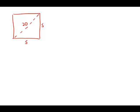A square mirror has a 20-inch diagonal. What is the approximate perimeter of the mirror in inches?